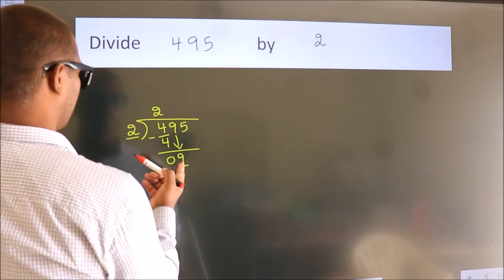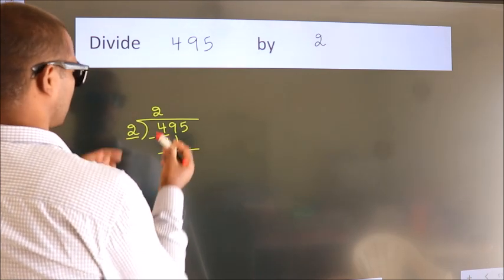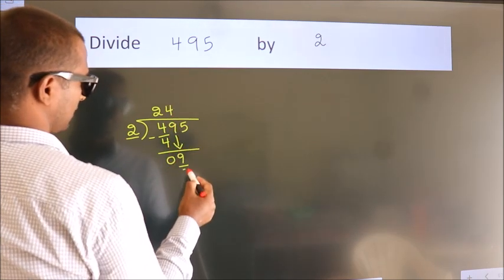A number close to 9 in 2 table is 2 times 4, 8.